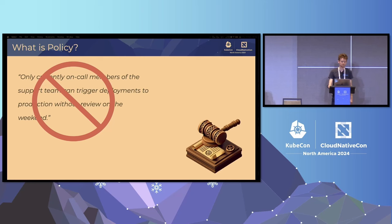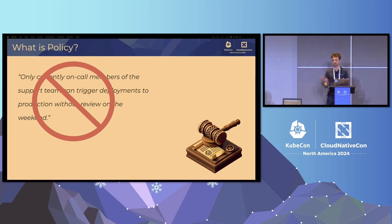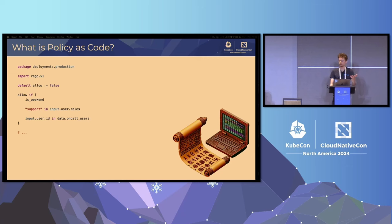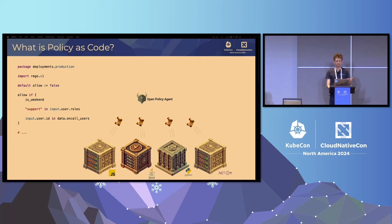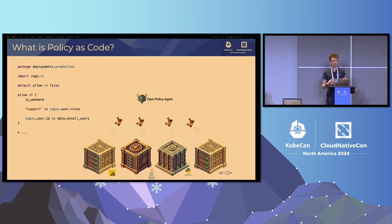So what's policy as code? Rather than having that on-call person phone someone to ask for extra permissions at the weekend to fix something in production, we could have codified that policy so the permission could be granted in an automated way. Here's an example of what that policy might look like as code. By default, we deny the request to deploy to production. But if it's the weekend, support is in the user's roles, and the support user is in the list of on-call users, then this request would actually be allowed. Writing policy as code like this allows us to automate these policy checks, and you can offload that policy as code to OPA.